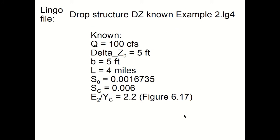Now if we take the information, the S0 which we just calculated, and we put that into the drop structure Lingo file that we used previously, and now rename it to Example 2, these are the knowns: Q is equal to 100 cfs, delta Z0 is 5 feet, b is equal to 5 feet which is the width of the drop structure.